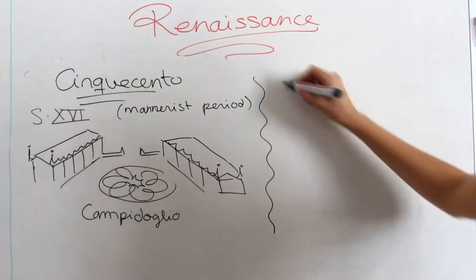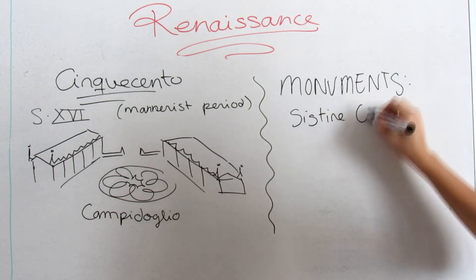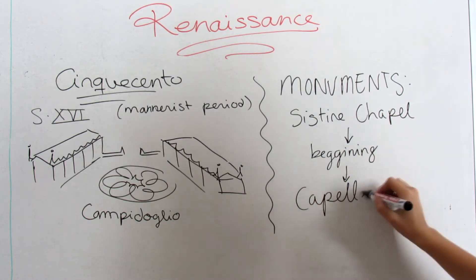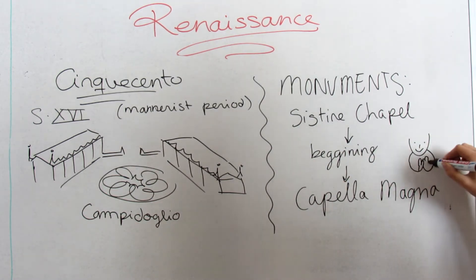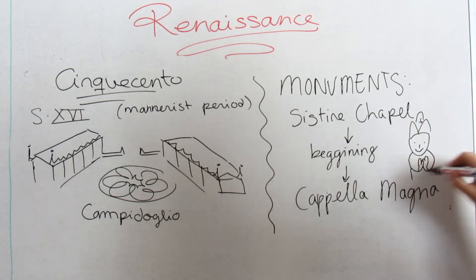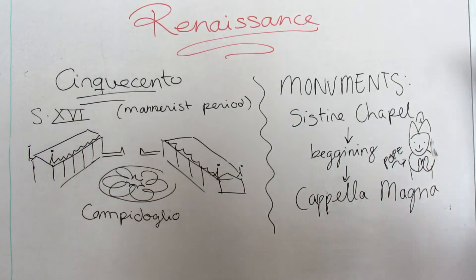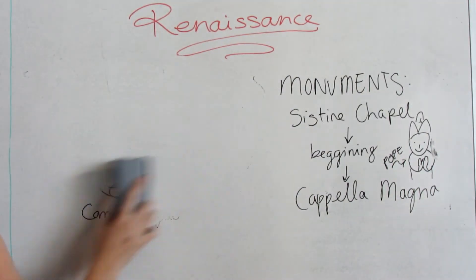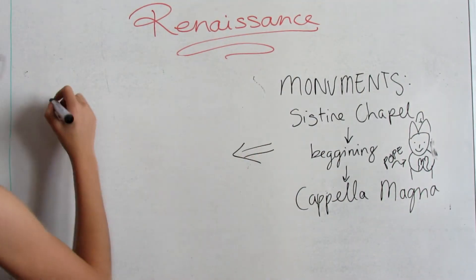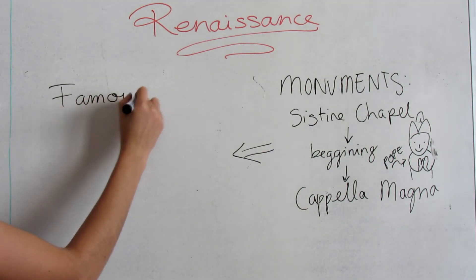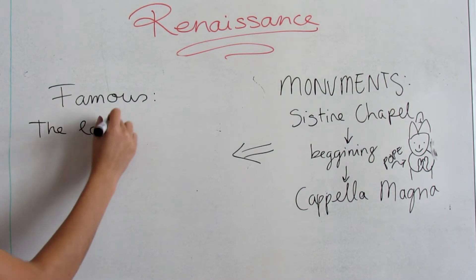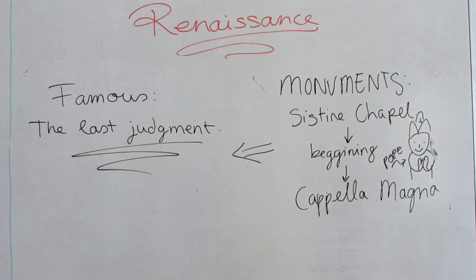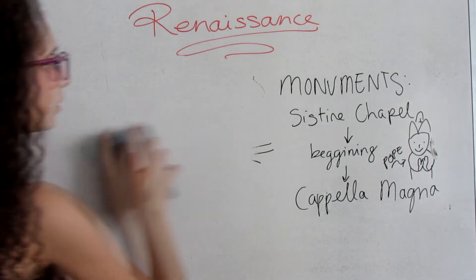Now I'm going to mention some monuments of the Renaissance. We have the Sistine Chapel, which is located in the Vatican City. It was originally known as the Capella Magna. The chapel takes its name from Pope Sixtus, who restored it between 1477 and 1480. Since that time, the chapel has served as a place for both religious and papal activity. Today it is the site of the papal conclave, the process by which a new pope is selected. The fame of the Sistine Chapel lies mainly in the frescoes that decorate the interior, and most particularly the Sistine Chapel ceiling and the Last Judgment by Michelangelo.